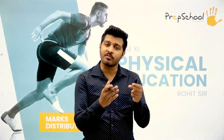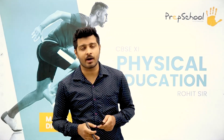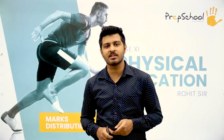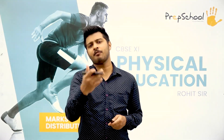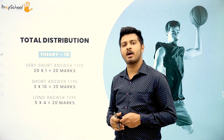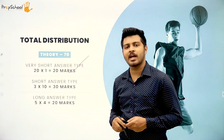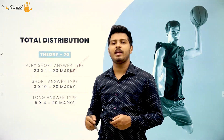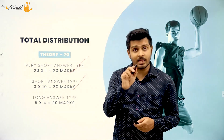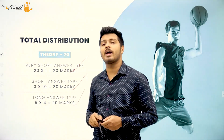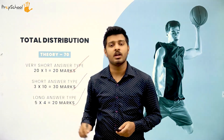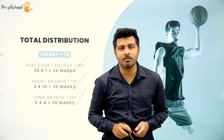You have the theory part and the practical part. The theory part carries 70 marks and the practical part carries 30 marks. In theory, you will have very short answer type questions — 20 in number, each carrying one mark. Then short answer type questions — 10 in number, each carrying three marks. Then long answer type questions — four in number, each carrying five marks. That gives you a 70-mark theory paper.